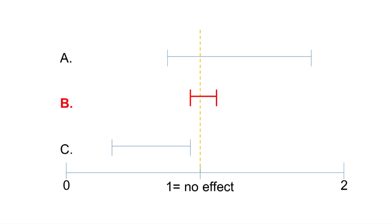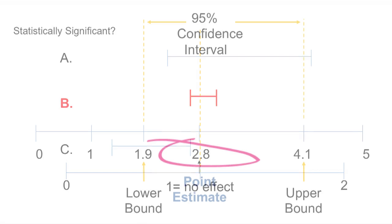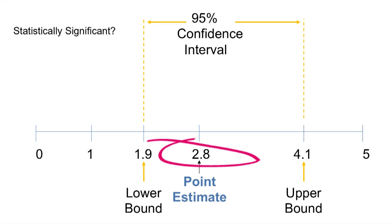Why is B more precise? Because the confidence interval is narrower compared with A and C. A is the widest interval of the three examples, making it the least precise. Statistical significance of the confidence interval depends on whether it includes the null value. So while B is a more precise estimate, it is not statistically significant because it includes the null value of 1. Here's a quick example to test your understanding: is the risk ratio estimate of 2.8 with its 95% confidence intervals of 1.9 to 4.1 statistically significant?